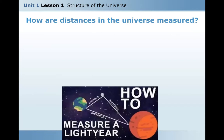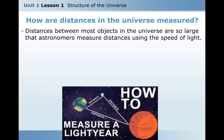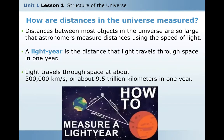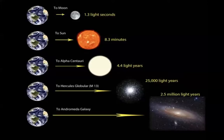How are distances in the universe measured? The distances between most objects in the universe are so large that astronomers measure distance using the speed of light. A light year is the distance that light travels through space in one year — about 300,000 kilometers per second, or about 9.5 trillion kilometers per year. The distance to the sun takes about 8.3 minutes. The distance to Alpha Centauri is 4.4 light years. The Hercules Globular Cluster M13 is 25,000 light years away. And the Andromeda galaxy is 2.5 million light years away.